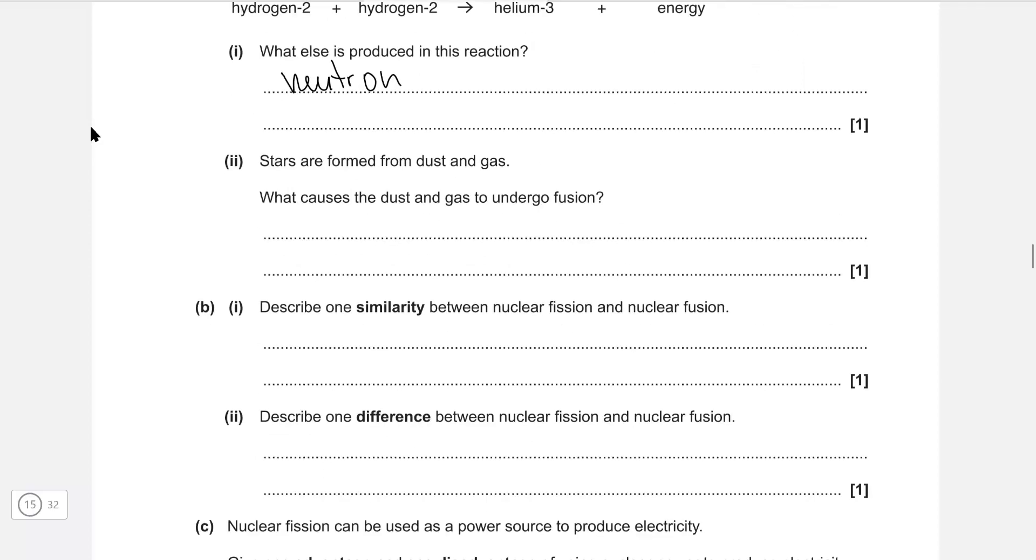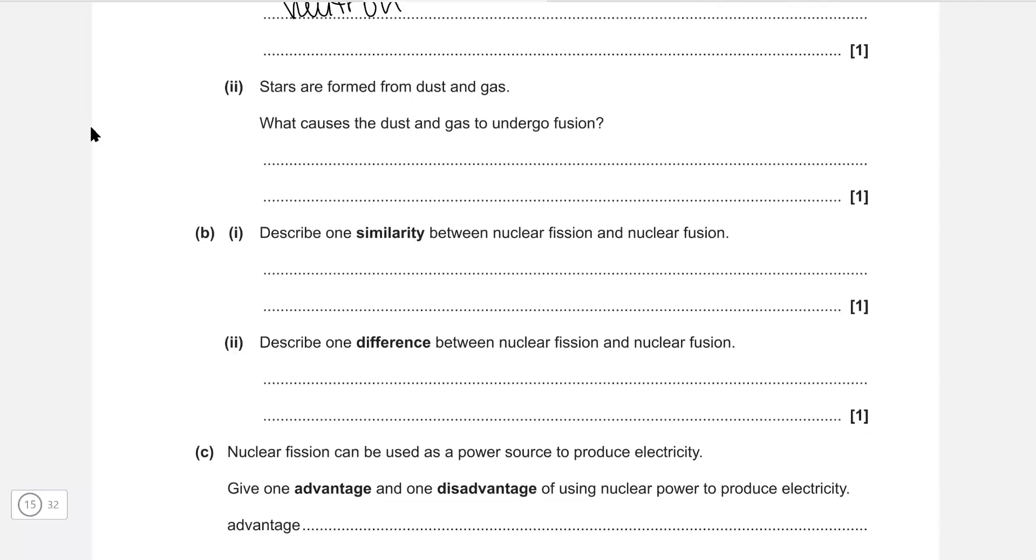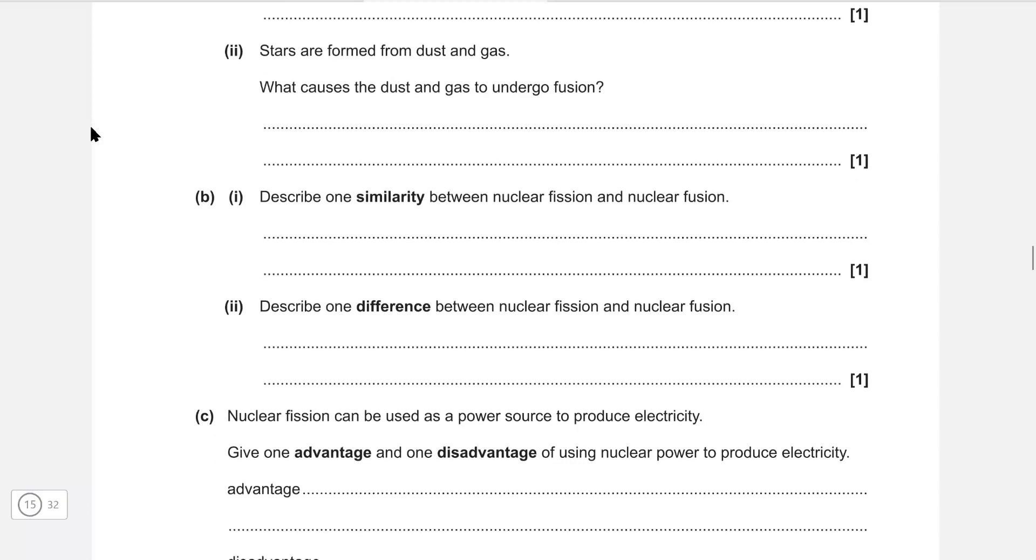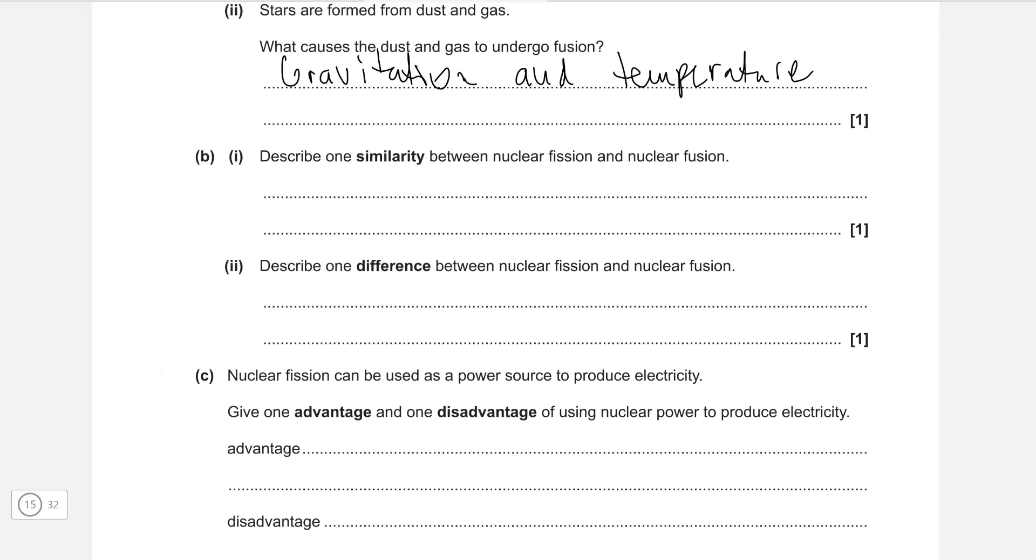Stars are formed from dust and gas. What causes the dust and gas to undergo fusion? Gravitation and very high temperature. Describe one similarity between nuclear fission and nuclear fusion. In each of them, we can say that mass is converted to energy.